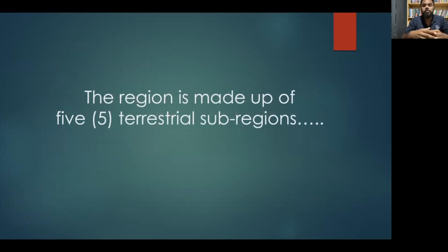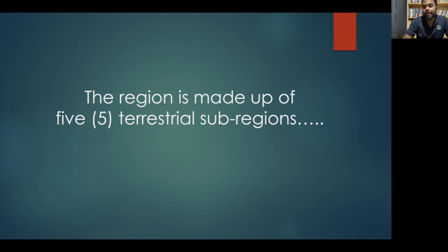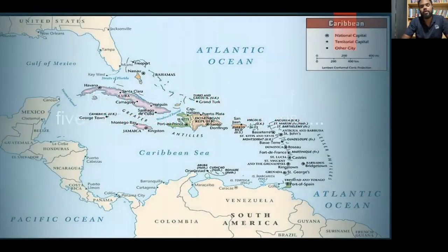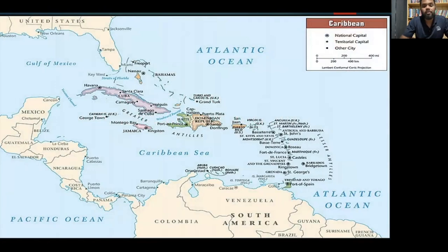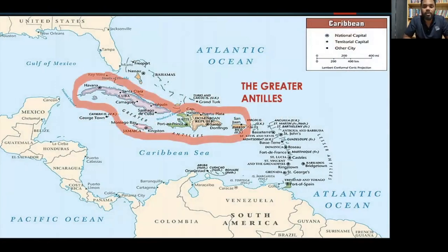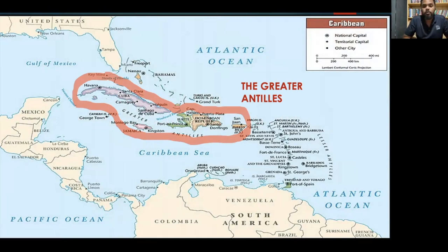The Caribbean region is made up of five main terrestrial sub-regions. The first sub-region is called the Greater Antilles, which is made up of Cuba, the Dominican Republic and Haiti — which together form Hispaniola — Puerto Rico, and of course Jamaica.